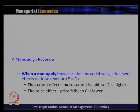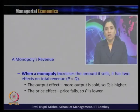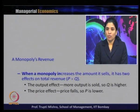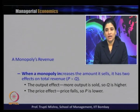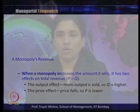Total revenue is price multiplied by quantity. There is an output effect — more output is sold so Q is higher — and a price effect — price decreases so price is lower. Whenever the monopoly increases output, it has to reduce the price, which leads to these two kinds of effects: the output effect and the price effect.